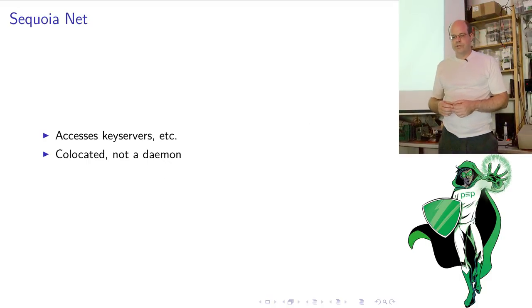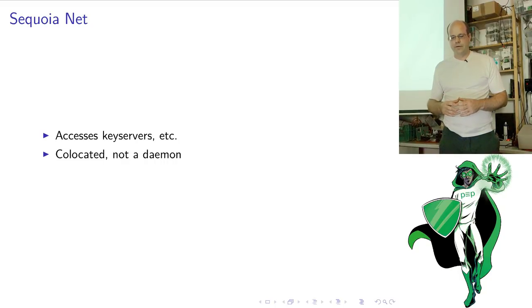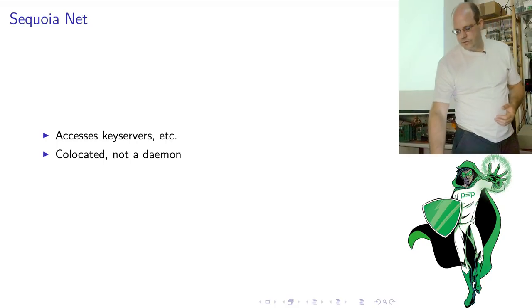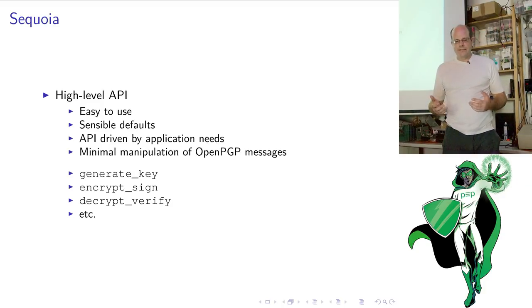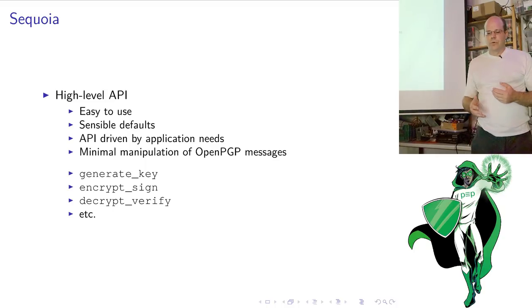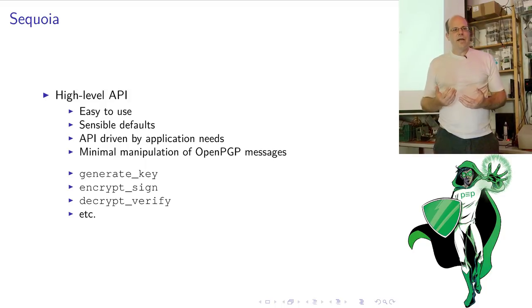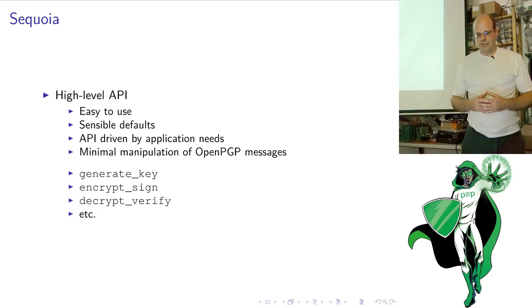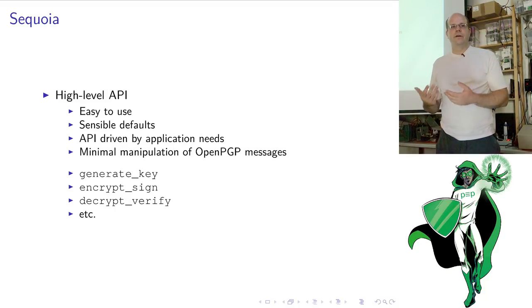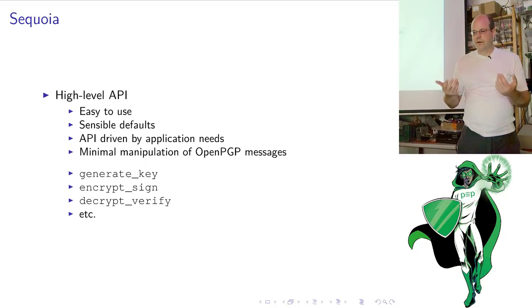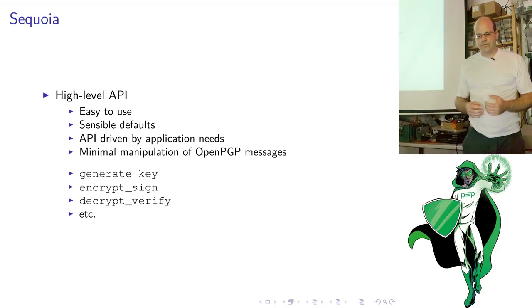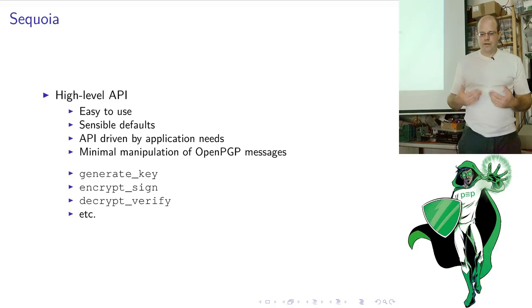The Sequoia network component is just a library — it's not a separate daemon, it's co-located with the process using it. Normally the public key store uses it to access key servers, WKD, and other things. Sequoia's high-level API is easy to use, and we try to provide sensible defaults as much as possible, driven by discussions with application developers and people with experience in the OpenPGP world. For example, there's a function that generates a key using sensible defaults — you specify maybe just the user ID and it generates a reasonable OpenPGP key, with no ability to set things like the number of bits for your RSA key at this high-level API.